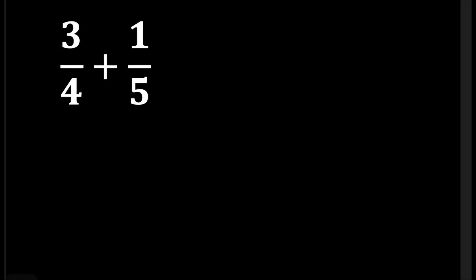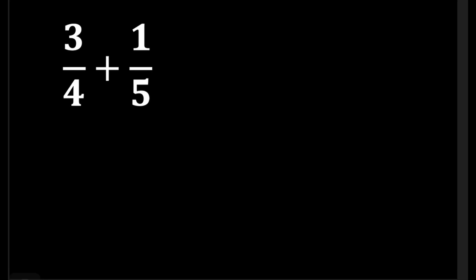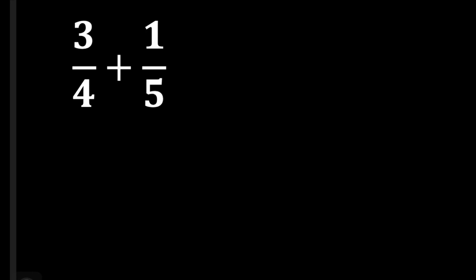Our first example: 3 fourths plus 1 fifth. I have a tutorial video about finding the LCM of numbers, so you have to check it out — I'll be posting the link in the description box below. Let's get our LCD using continuous division. What number can we divide 4 and 5? Is there a number that we can divide 4 and 5? No, except for 1.